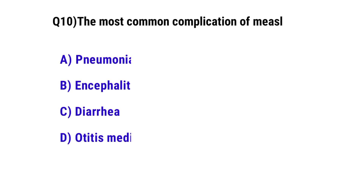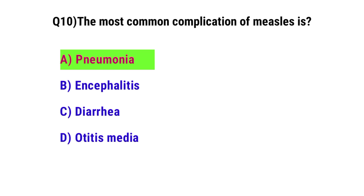Question No. 10: The most common complication of measles is — the correct option is A: pneumonia.